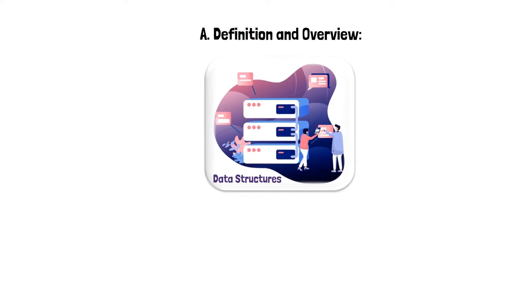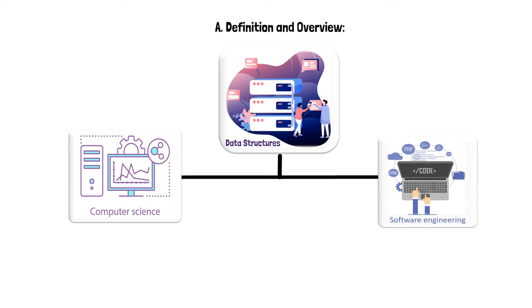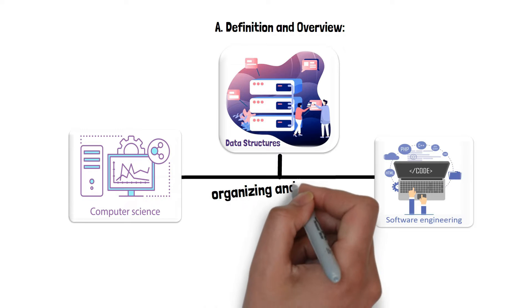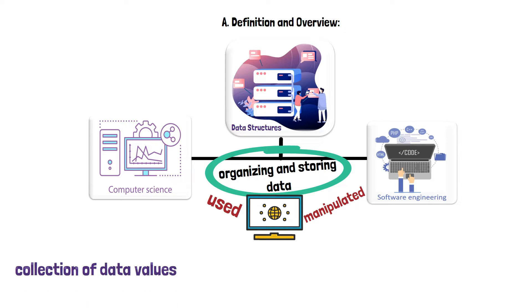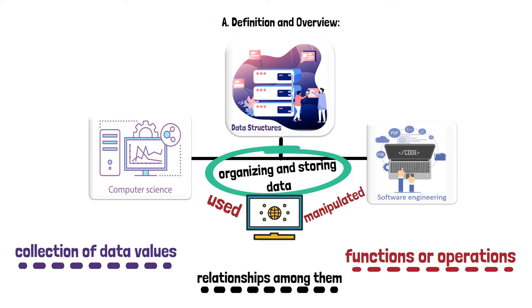Definition and Overview. Data structures are an essential aspect of computer science and software engineering. They are ways of organizing and storing data in a computer so that it can be efficiently used and manipulated. In other words, a data structure is a collection of data values, the relationships among them, and the functions or operations that can be applied to the data.